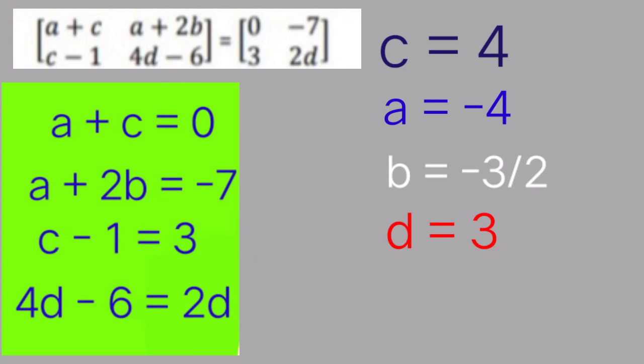So our answer will be A is equal to minus 4, B is equal to minus 3 by 2, C is equal to 4, and D is equal to 3. And if we put these values A is equal to minus 4, B is equal to minus 3 by 2, C is equal to 4, and D is equal to 3 in the left-hand side of the given question, then both matrices are equal.